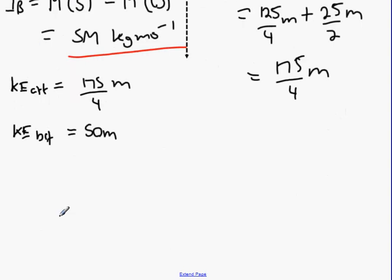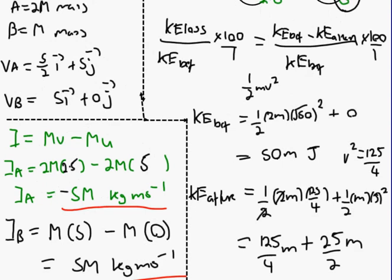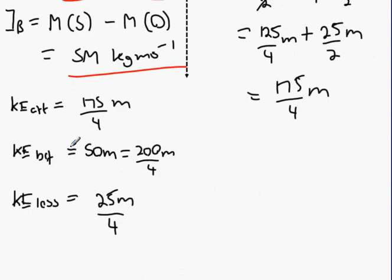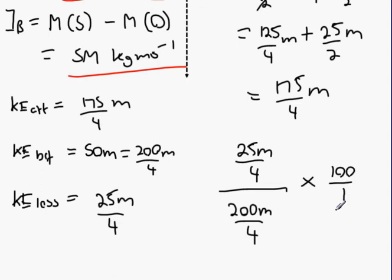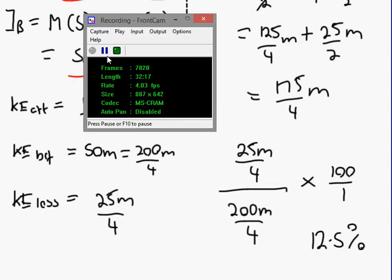Let's just redo this. K after is 175 over 4m. What was k before? K before was 50m. So loss in ke - 50m minus 175 over 4m. 50m can be converted into 200m over 4. Take them away from each other - the loss in kinetic energy will be 25m over 4. We've got to revisit our original formula. Loss in kinetic energy, 25m over 4, divided by your original kinetic energy, 200m over 4, multiply it by 100 over 1. It's going to be 1.8 multiplied by 100, which should be 12.5%.